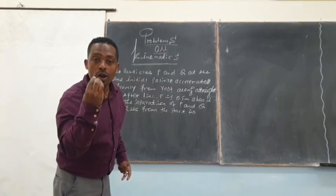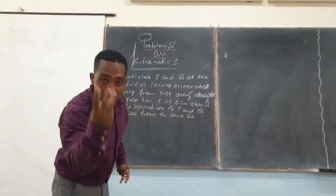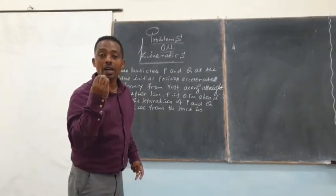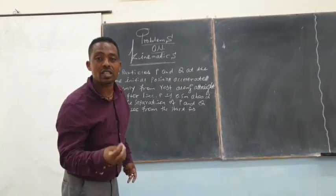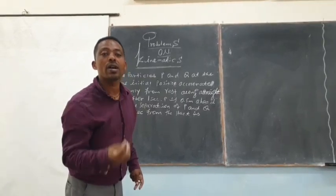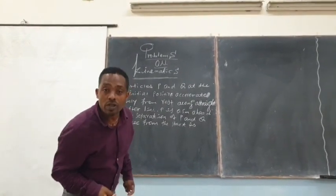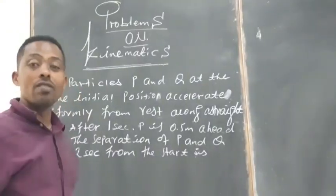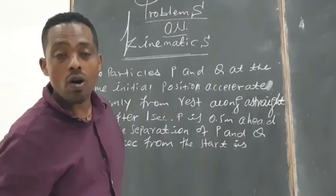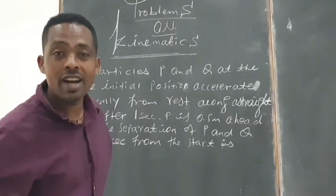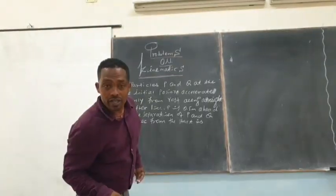We have to know, we have to choose our frame of reference. To choose the frame of reference, we have to know that the frame of reference should satisfy the first law of Newton or Newton's first law. What does Newton's first law say? If an object is at rest, it will remain at rest forever until an unbalanced force acts upon it.